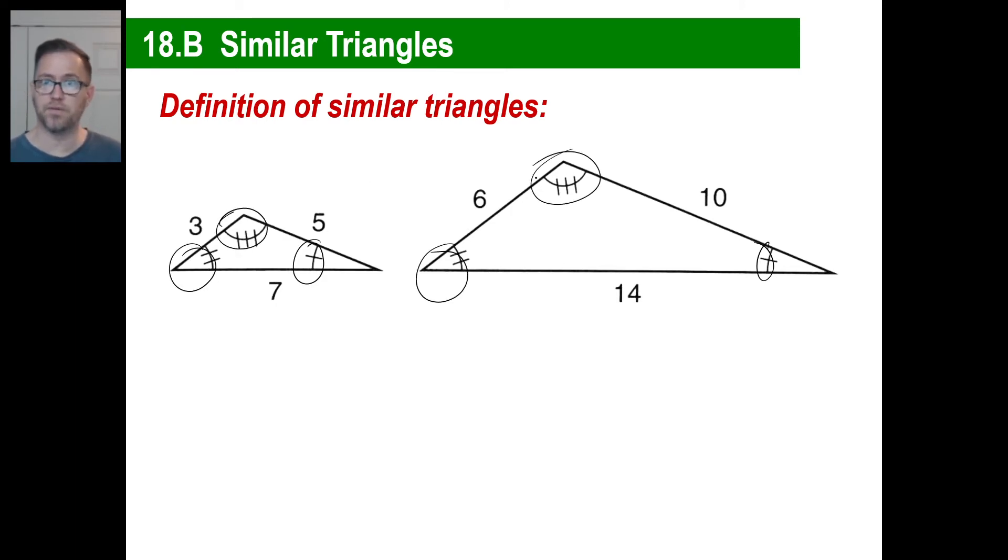Now, if you notice the tick marks on the angles, this one matches this one, this one here matches this one, and this one matches this one. The official definition of similar triangles is basically two triangles that have all three angles the same. And you can see that just because the angles are the same, that doesn't mean the side lengths are going to be the same. Okay. Because you could have an angle open up. You can keep extending this. You can make this twice as big if you wanted to.